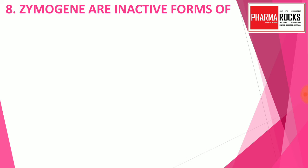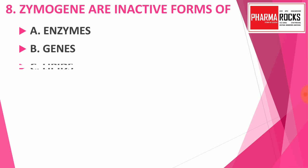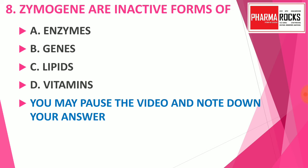Question number 8: Zymogens are the inactive form of — option A: enzymes, option B: genes, option C: lipids, option D: vitamins. You may pause the video and note down your correct answer. You can also comment your score after completion of this quiz. If you have any query related to the question and answer key, you may comment in the comment section. The correct answer is option A: enzymes. Zymogens are the inactive form of enzymes.